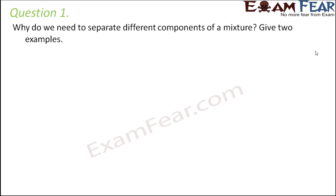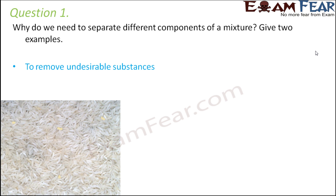Question number 1: why do we need to separate different components of a mixture? Give two examples. Throughout this lesson we talked about different separation processes. The first reason is to remove undesirable substances. For example, when we cook rice, the rice grains might have tiny worms or pebbles which are harmful for our body. So to protect our body, the first step is to separate these undesirable components from the rice grains.